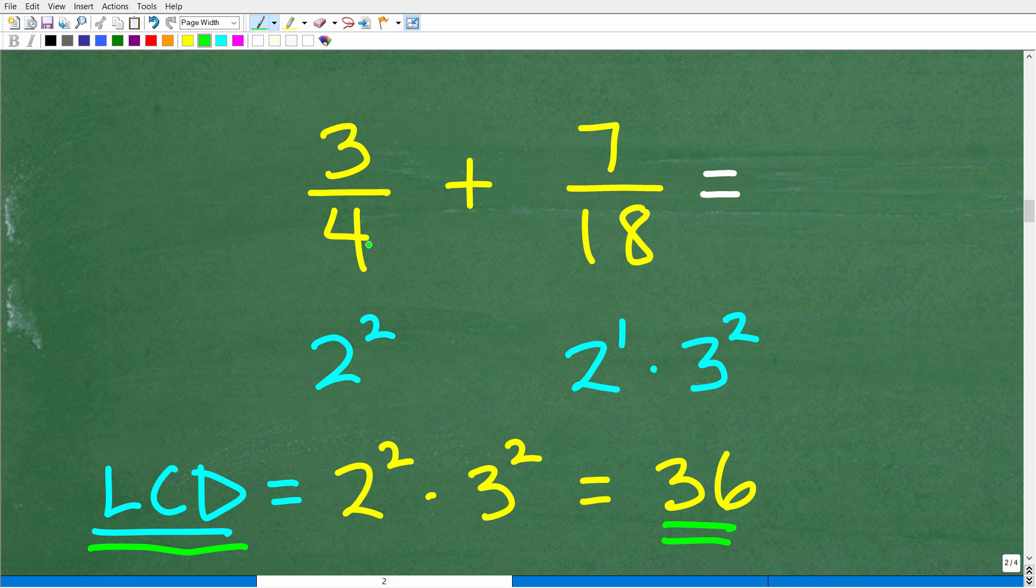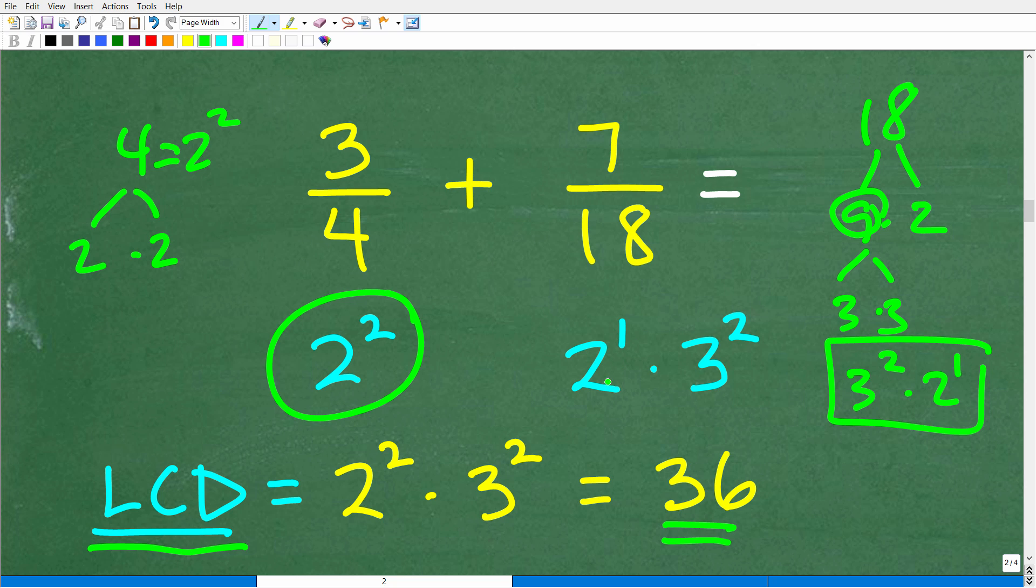Now, to find the LCD, what you want to do as a procedure is the denominators, you want to prime factor the numbers in the denominators, each respective denominator. So 4 is the same thing as 2 times 2. So we can express 4 as the prime factors as 2 squared. So we always want to express this in terms of a power. And so 4 in terms of its prime factors is the same thing as 2 squared. Alright, so 18 is what? Well, we can be like, alright, that's 9 times 2. And then 9 is 3 times 3 because 9 is not a prime factor.